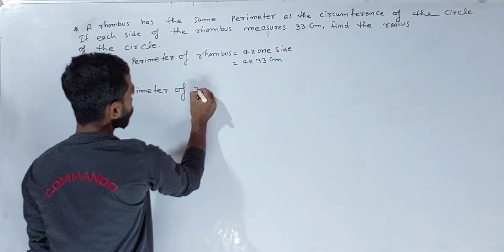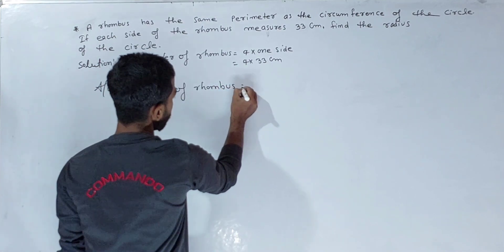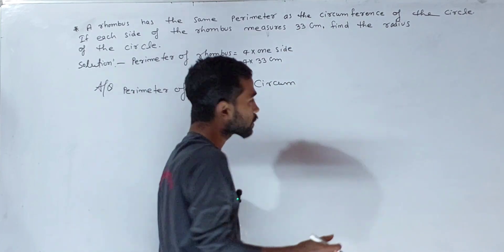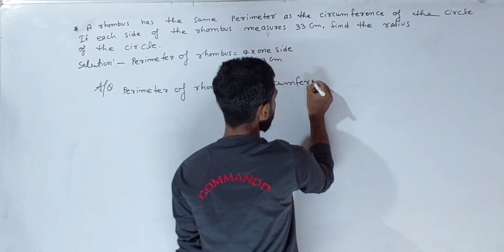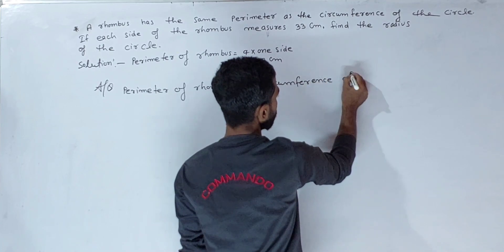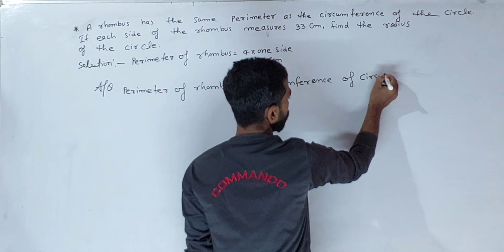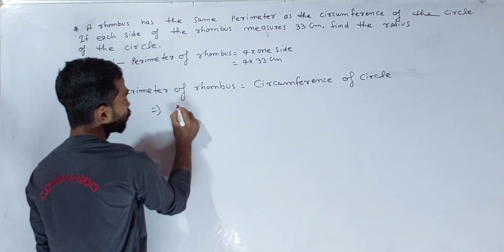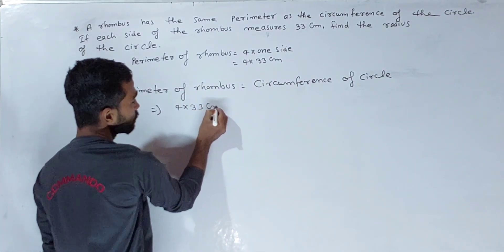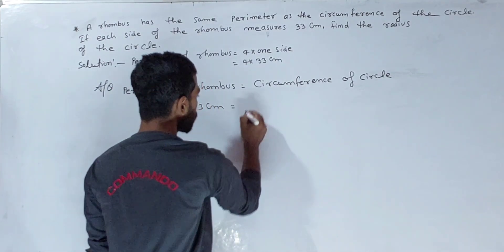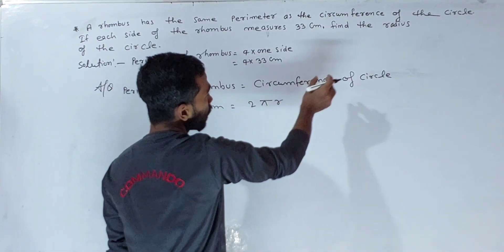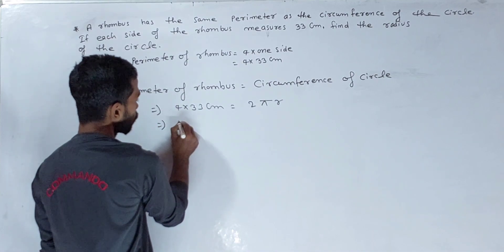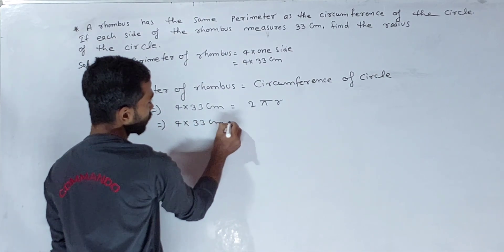Perimeter of the rhombus equals the circumference of the circle. So we set up the equation: 4 times 33 centimeters equals 2 times pi times r.